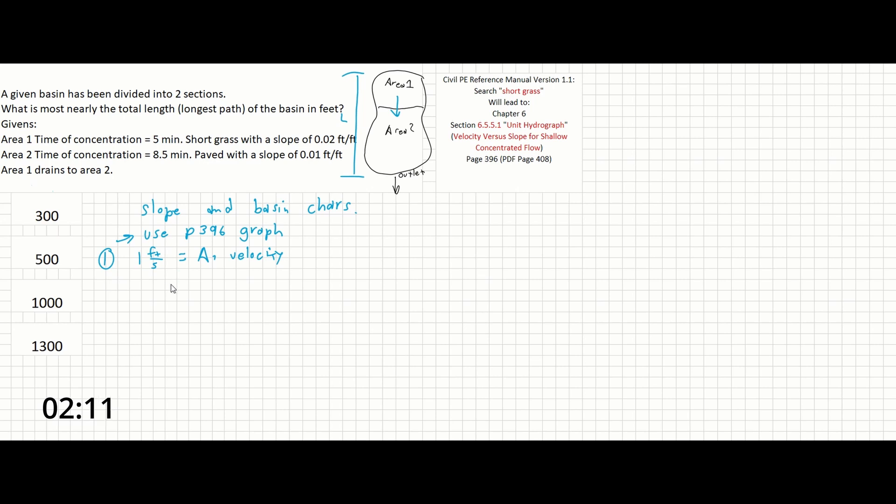Likewise, for area 2, if we trace over from 0.01 feet per foot to the paved line, that gives us about 2 feet per second.